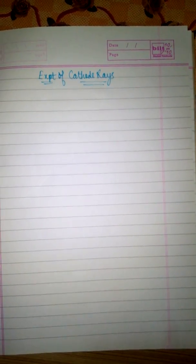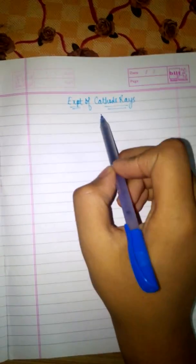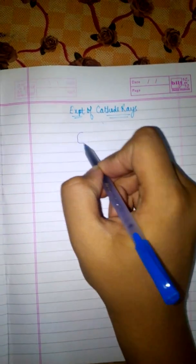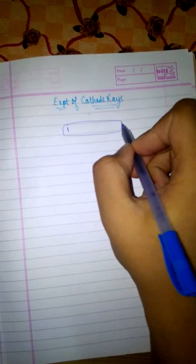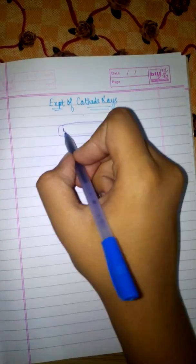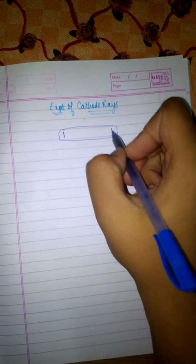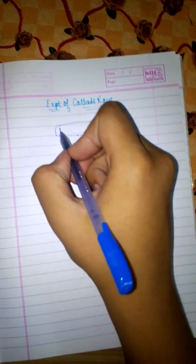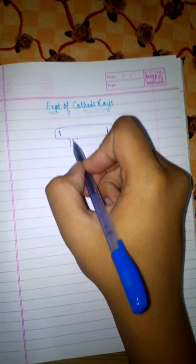Hello friends, this is Tushar Gupta welcoming you to Learn Easy. Today's video is based on the experiment of cathode rays. For this experiment you should know what a discharge tube is. A discharge tube is a tube in which two electrodes are connected.